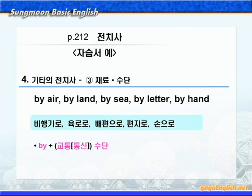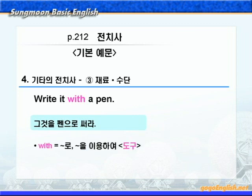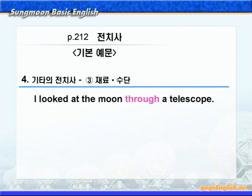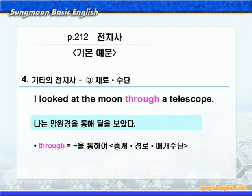다음으로 전치사 with가 나옵니다. 'Write it with a pen.' 해석해 보면, '그것을 펜으로 써라'라는 뜻인데요. 여기서 with는 '뭐뭐로' 혹은 '뭐뭐를 이용하여'라는 뜻으로 도구를 나타내 주고 있습니다. 다음으로 through가 나옵니다. telescope는 '망원경'이라는 뜻이니까, '나는 망원경을 통해서 달을 보았다'가 됩니다. 여기서 through는 '뭐뭐를 통하여'라는 뜻으로 중계나 경로 혹은 매개수단을 나타내 주고 있어요.